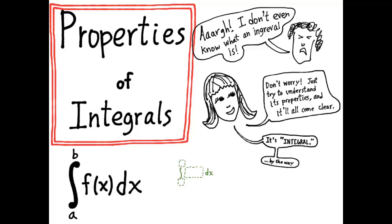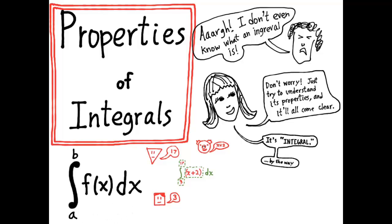Do you want the lower bound of integration to be 3? We fill in a 3 there. Do you want the upper bound to be 17? We fill in a 17 there. And what function do you want — x plus 2? We fill in x plus 2. In other words, when we write the integral from a to b of f of x dx, we're representing every possible integral.